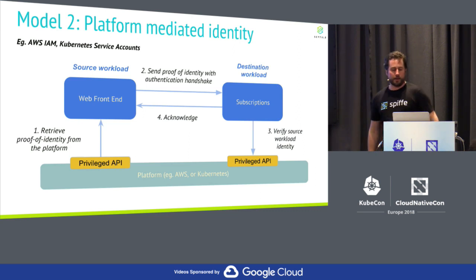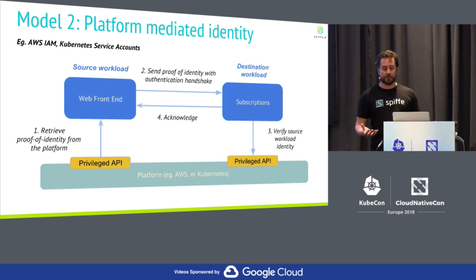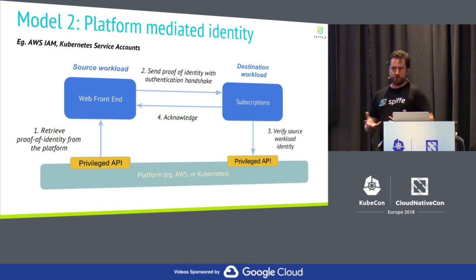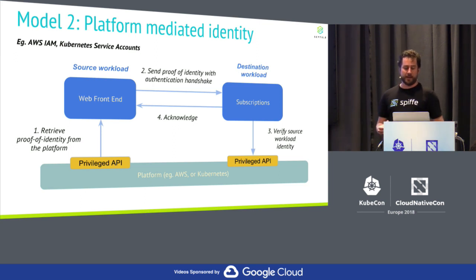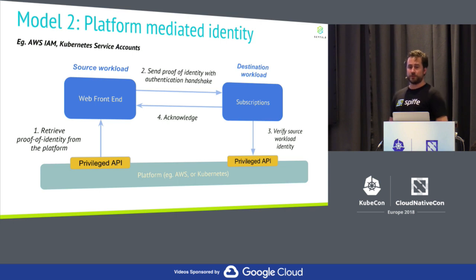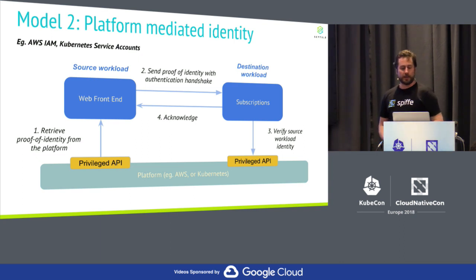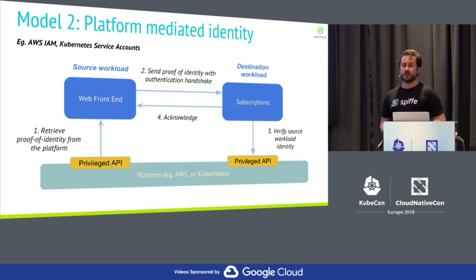The other model is what we often see with consistent platforms — for example in AWS or Kubernetes. Broadly, the way this model works is you have some kind of privileged API that is able to reason out-of-band who a workload is. Rather than having credentials created in and copied to a source workload, this platform-mediated privileged API is able to say: we have an existing concept of who you are. If you're running an EC2 instance in AWS, we know what security group you're in, what IAM roles you have.